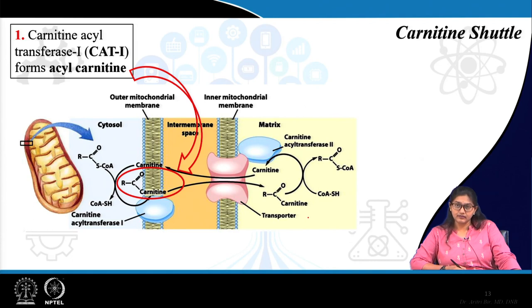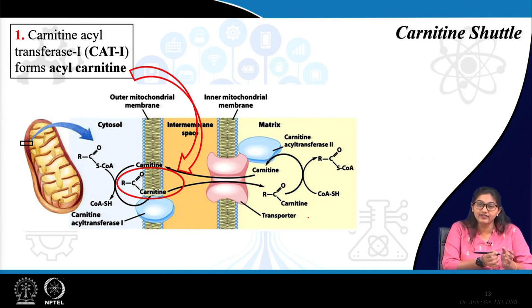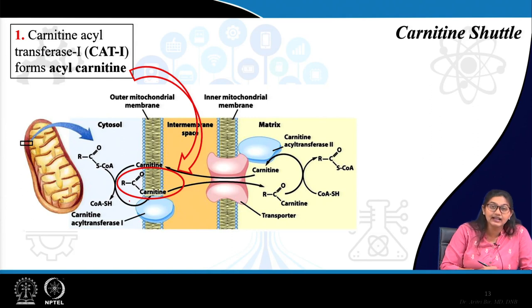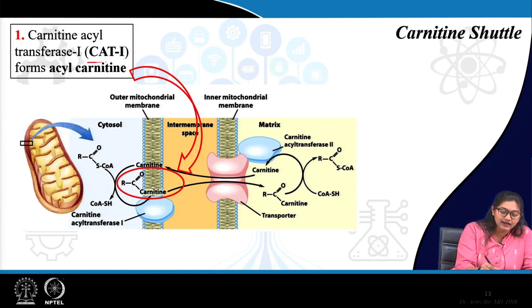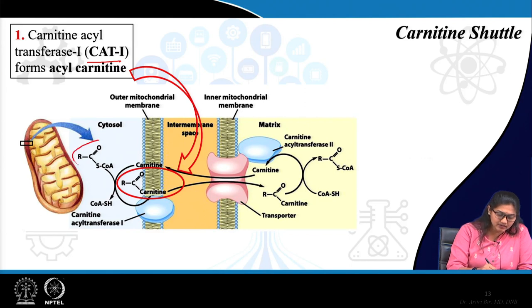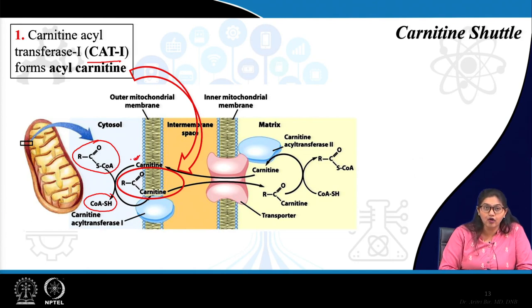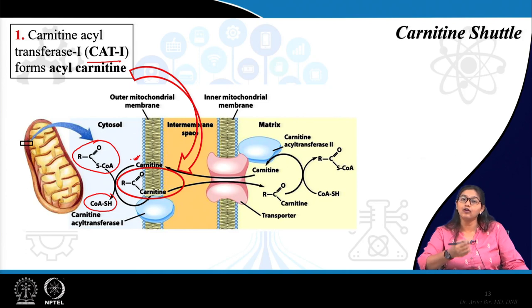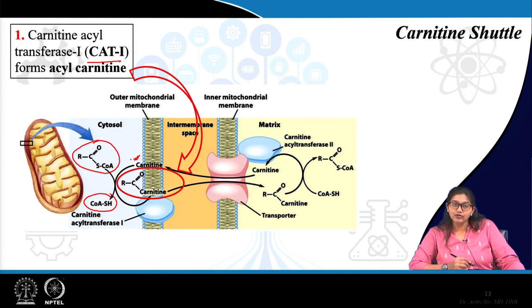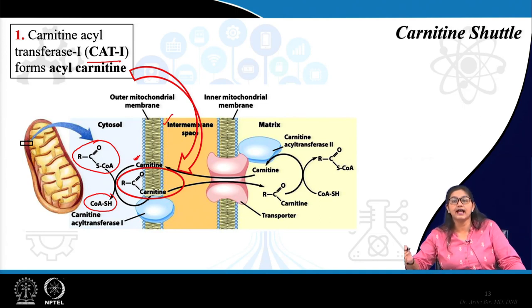The carnitine shuttle is important for transporting long-chain fatty acids from outside the mitochondria to inside. The first step is formation of acyl carnitine: the activated fatty acid and carnitine form a complex — acyl carnitine — with the help of the enzyme carnitine acyl transferase 1 (CAT1). This acyl carnitine complex is formed in the outer mitochondrial membrane and can diffuse through the intermembranous space towards the inner mitochondrial membrane.